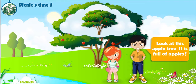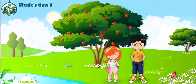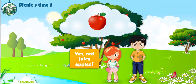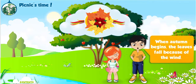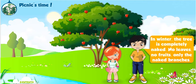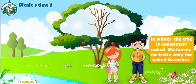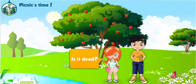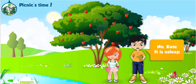Look at this apple tree. It is full of apples — red, juicy apples. When autumn begins, the leaves fall because of the wind. In winter, the tree is completely naked. No leaves, no fruits, only the naked branches. Is it dead? No, Kate. It is asleep.